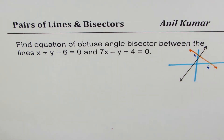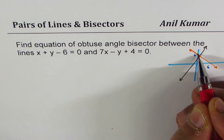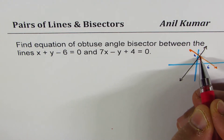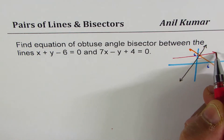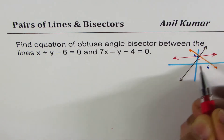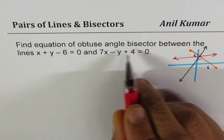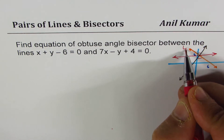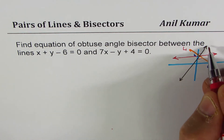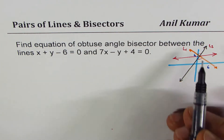When we say obtuse angle bisector, as you can see, there are two angles which are acute and one which is obtuse. We are interested in finding that particular bisector. There are always two bisectors; we want the obtuse angle bisector. Lines are l1 and l2 and we want to find that bisector.